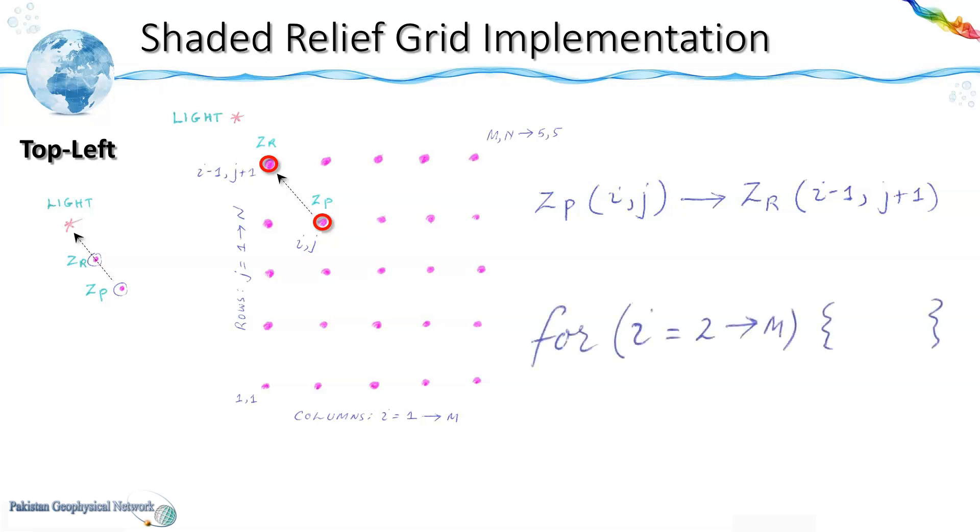Now the loop for i would be ranging from 2 to m because at i minus 1 position we need a reference node. Similarly the loop for j would be ranging from 1 to n minus 1 because at j plus 1 position we need a reference node.